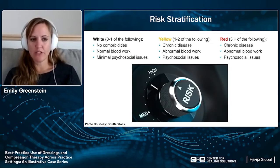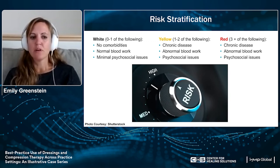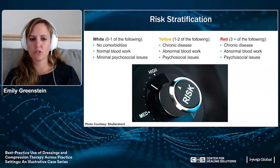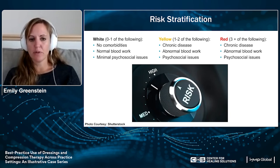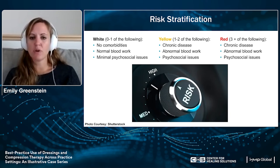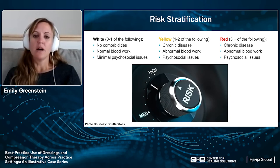A simple guide utilizing white, yellow, and red risk levels was developed. White means no comorbidities, normal blood work, and minimal psychosocial issues. Yellow means an underlying chronic disease, possibly abnormal blood work, and possible psychosocial issues. Red means chronic disease, abnormal blood work, and many psychosocial issues. Patients are placed into one of these categories to guide treatment selection.